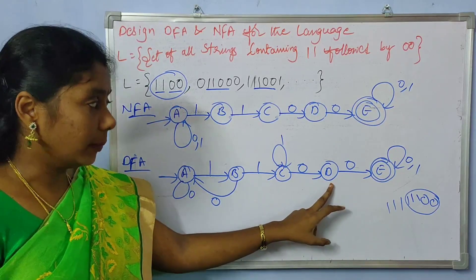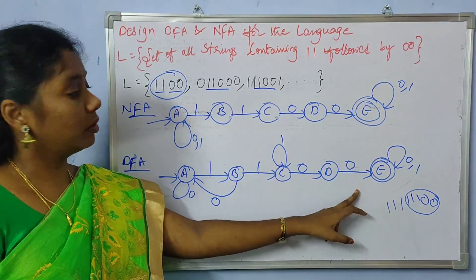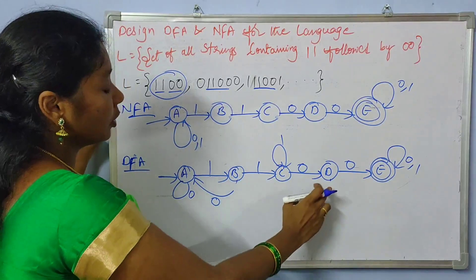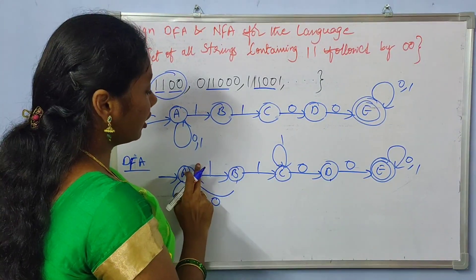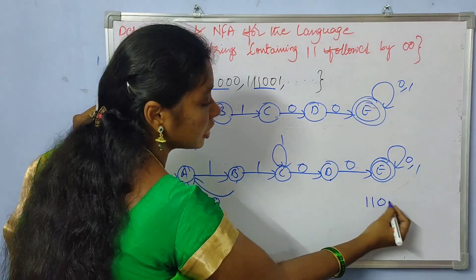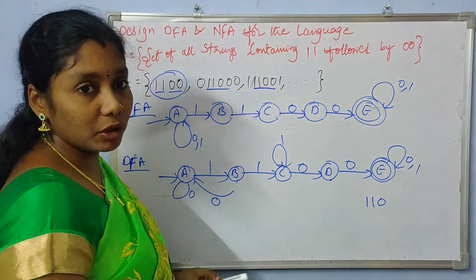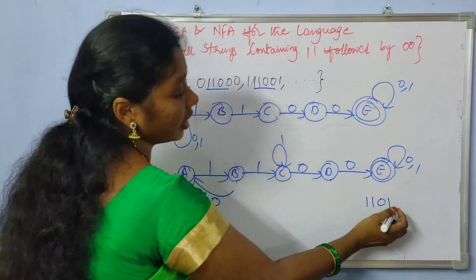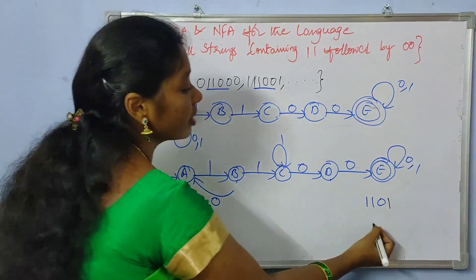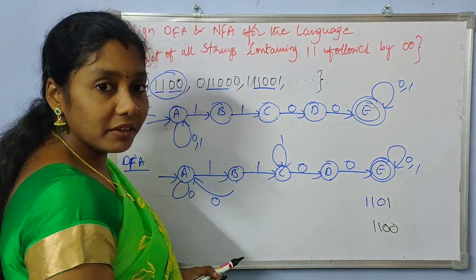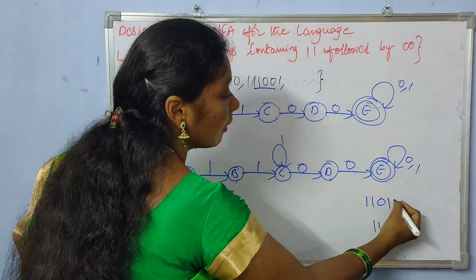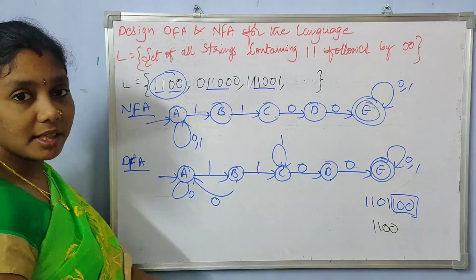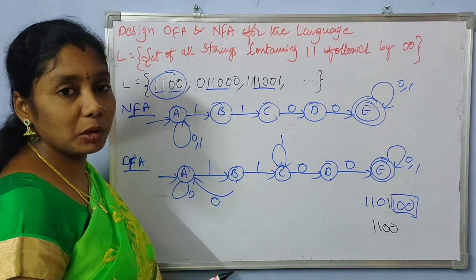Let us come to point D. From D we need to have a transition with one to complete our required sequence. What is our required sequence? 1, 1, 0, 0. To complete the required sequence we need transitions for one and zero, zero. Looking at the transitions between states we have the sequence 0, 0 completing the path.